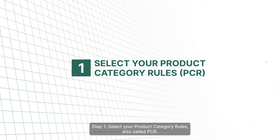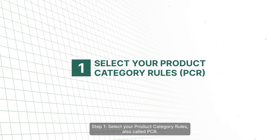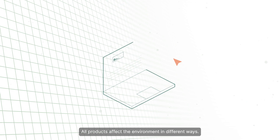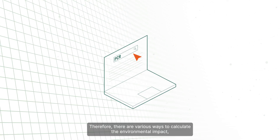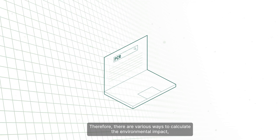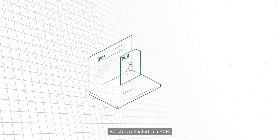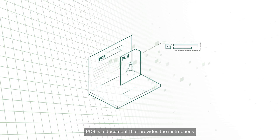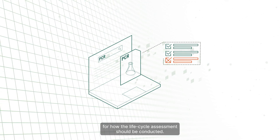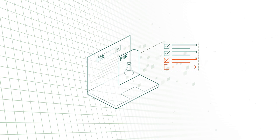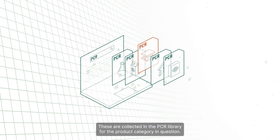Step 1: Select your product category rules, also called PCR. All products affect the environment in different ways. Therefore, there are various ways to calculate the environmental impact, which is reflected in a PCR. PCR is a document that provides the instructions for how the lifecycle assessment should be conducted. These are collected in the PCR library for the product category in question.